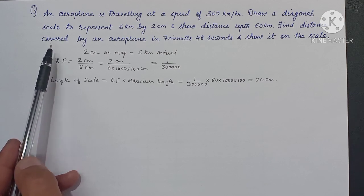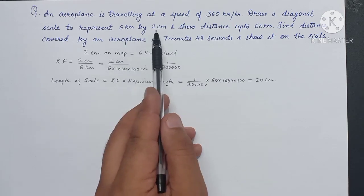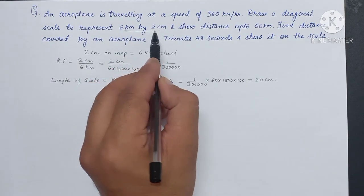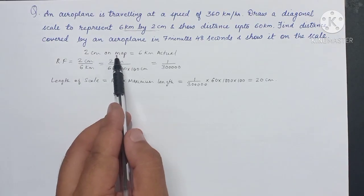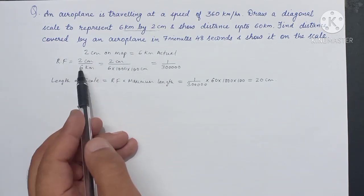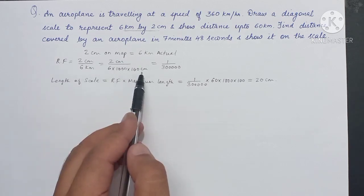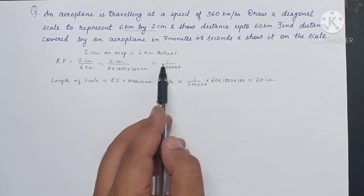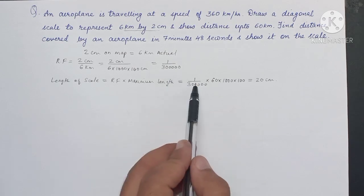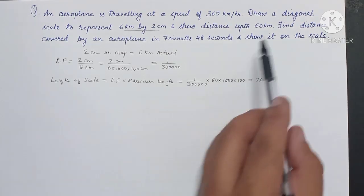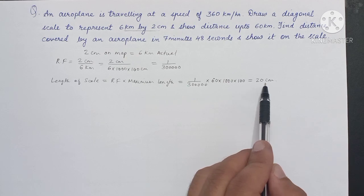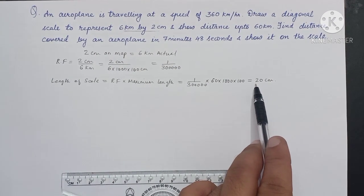The scale represents 6 kilometer by 2 centimeter. With this data we can determine the representative fraction: 2 centimeter on the map will show 6 kilometer actual, so the value of RF will be 2 centimeter divided by 6 kilometer. Changing the unit to centimeter we get the RF value. The length of scale equals RF multiplied by maximum length of 60 kilometer, converted to centimeter, giving a length of scale of 20 centimeter.